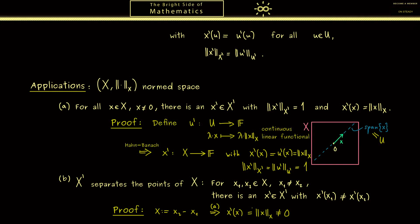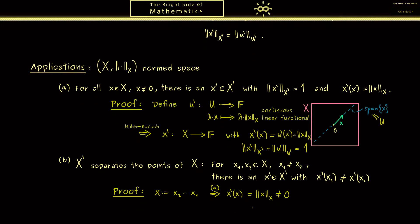However we also know that x' is linear so we can rewrite this as x'(x₂) - x'(x₁). Bringing this to the other side you see we immediately have what we want.